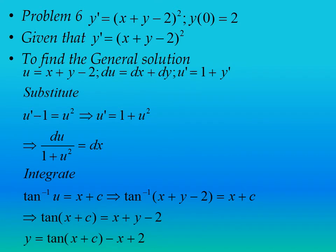The next problem is y' = (x + y - 2)², with initial value y(0) = 2. To find the general solution, let u = x + y - 2. Then du = dx + dy and u' = 1 + y'. Substituting into the differential equation gives u' - 1 = u², so u' = 1 + u².